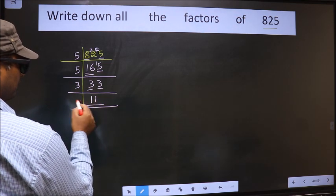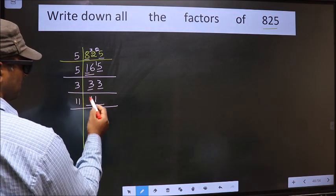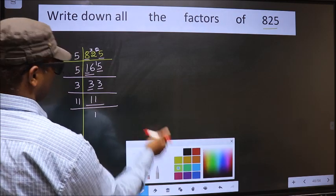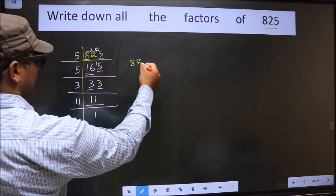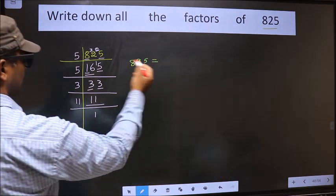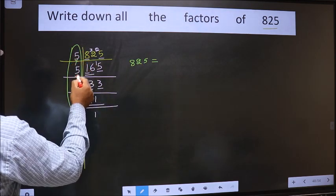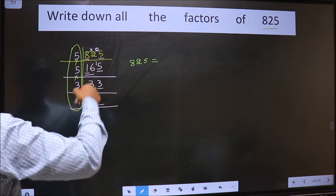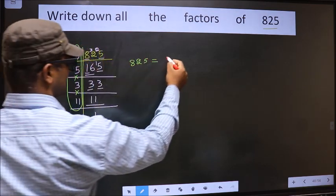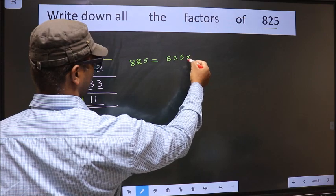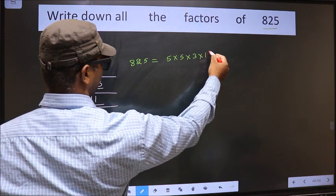Now here we have 11. 11 is a prime number, so 11 once 11. Now 825 is equal to the product of these numbers. Okay, product of these numbers. That is 5 into 5 into 3 into 11.